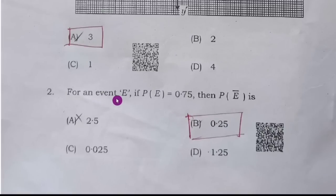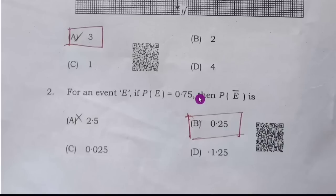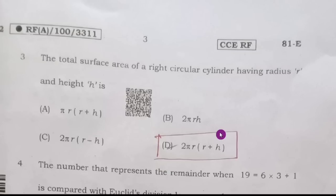Second question: for an event E, if p(E) = 0.75, then p(E bar) is. p(E bar) = 1 minus 0.75, which becomes 0.25. Therefore, option B is the right answer.